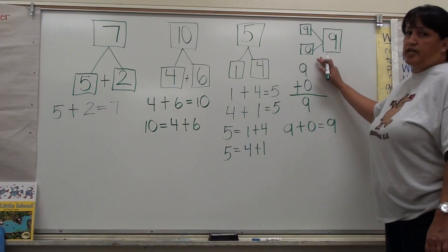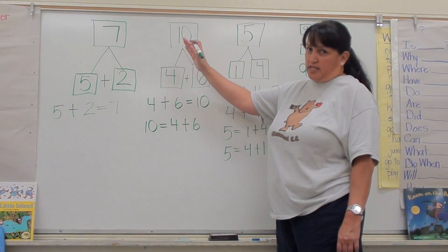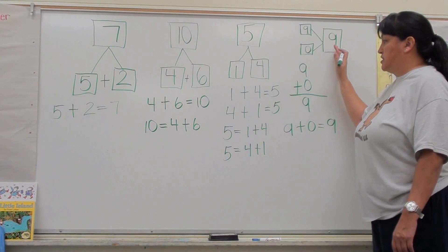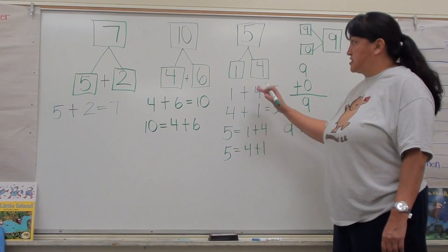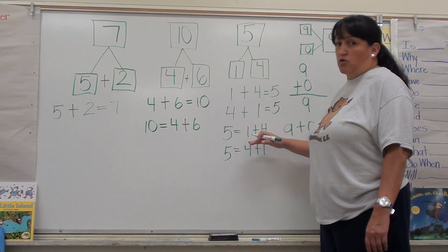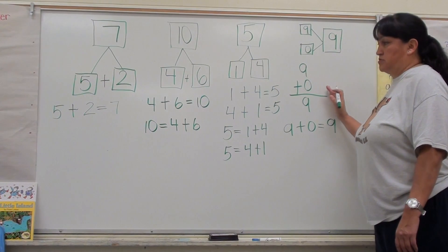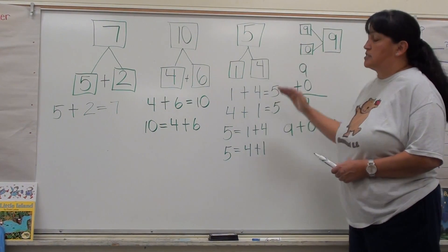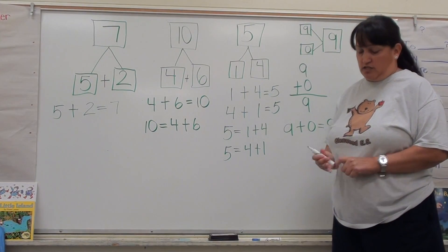There are different ways to do number bonds — we can do them vertically and we can do them horizontally. Just like our number sentences, we can take the number bonds and make our number sentences horizontal or vertical. And that's how you use number bonds to make your number sentences with addition.